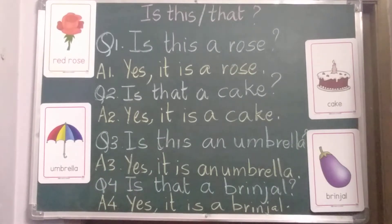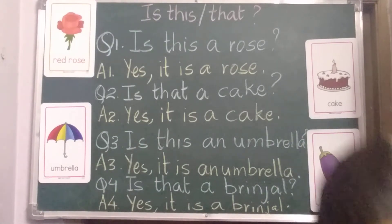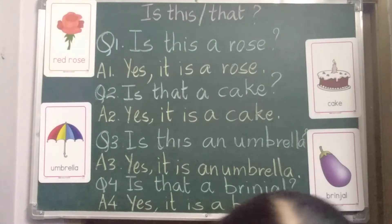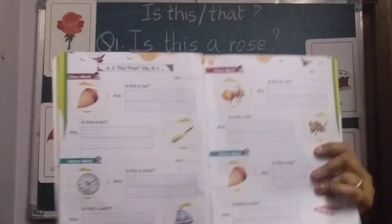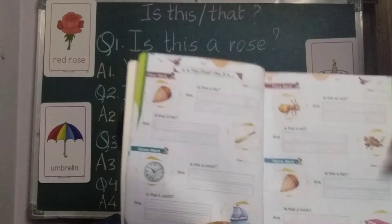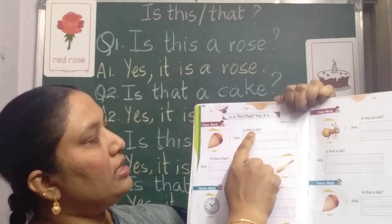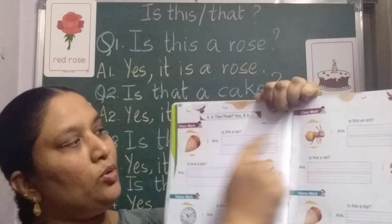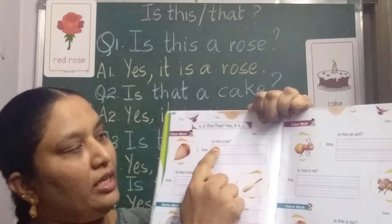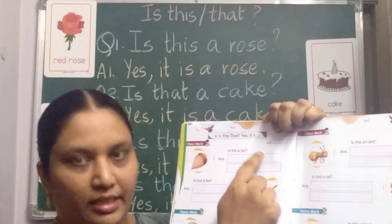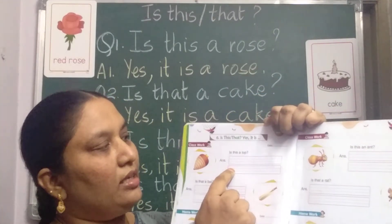So, hope you have understood this. Try to read your course book, page number 15. Then, this is your practice book. Today you should write in the practice book. For example: Is this a top? Two lines are given. In the first line you write: Yes, it is. In the next line: a top.